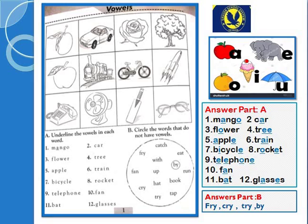Our first part is: underline the words in each vowel. Ab aapne ye jo objects hain, inme vowels use hue hain, aapne inko underline karna hai. First mein hai mango — M, A, N, G, O. Toh M kya hai baccho? Consonant hai. Aur A isme kya hai? Vowel hai. N, G consonant hai. Aur O kya hai? Vowel hai. Inko underline karna hai.